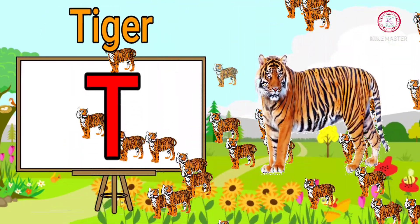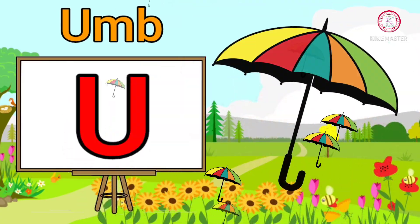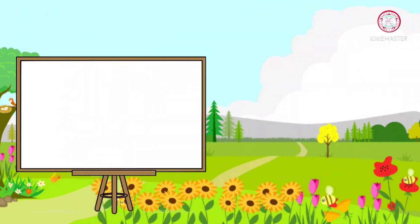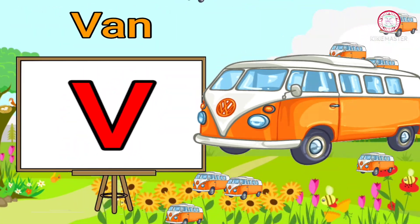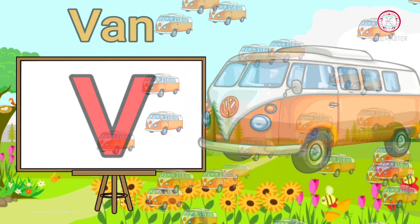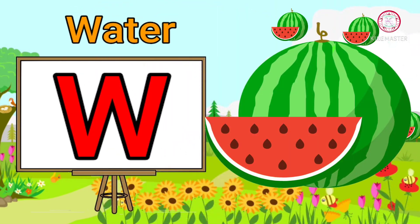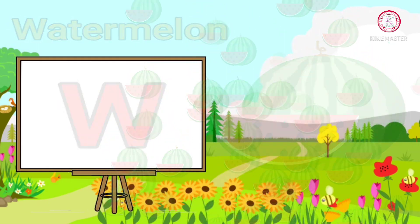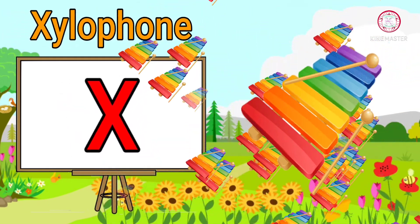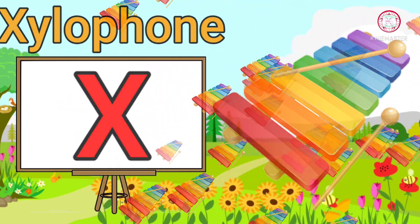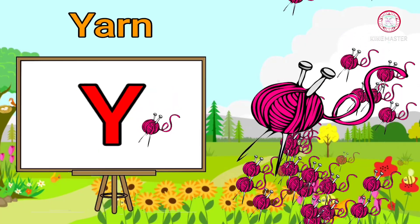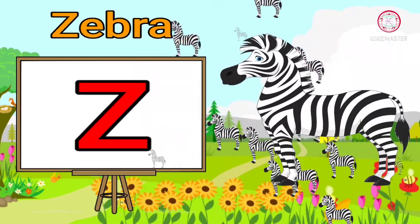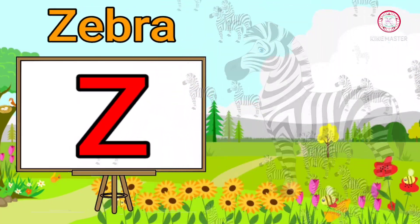T for tiger. U for umbrella. V for vein. W for watermelon. X for xylophone. Y for yarn. Z for zebra.